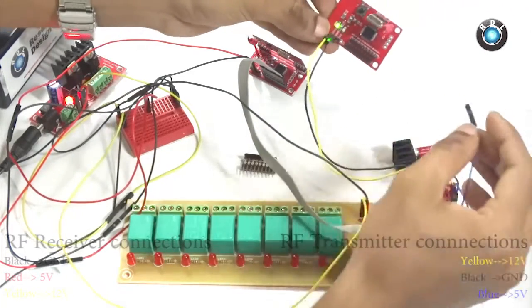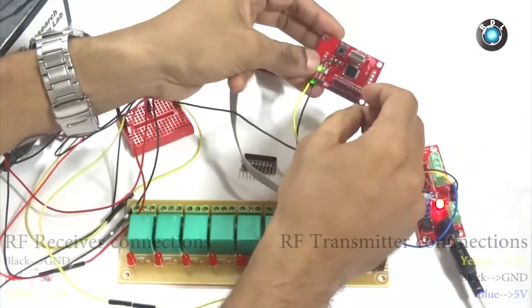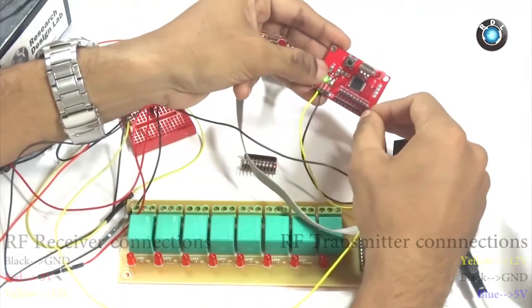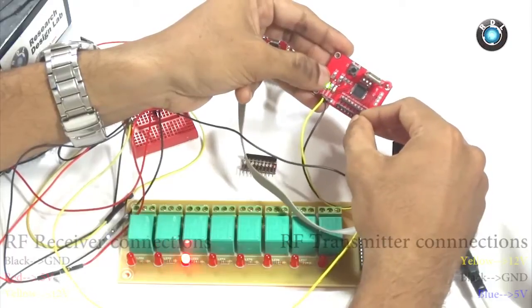Now I shall give this 5V pulse to the transmitter module. Notice the relays turning on and off at the receiver end. So by using this board, you could also control devices connected to the relays.